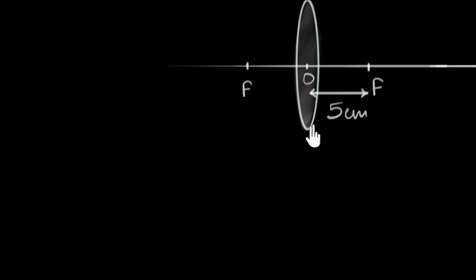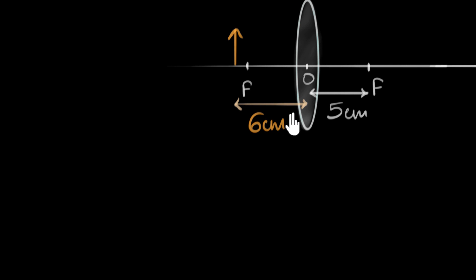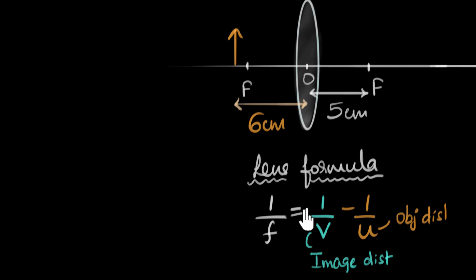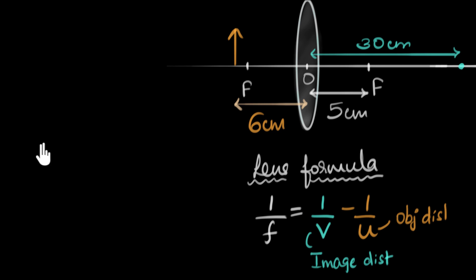In a previous video, we took a convex lens of focal length five centimeters, and in front of it we kept an object six centimeters in front of it. Our goal was to figure out exactly where the image would be without having to draw any ray diagrams. We introduced a formula called the lens formula, which connects the three things — the focal length, the image distance, and the object distance — such that if we know any two, we can figure out the third. We substituted these values using signs and figured out that the image was 30 centimeters from the lens.